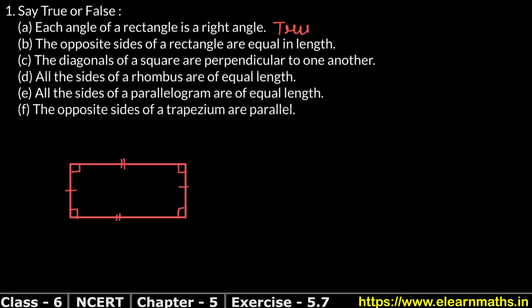Right angle means 90-degree angle. And the opposite sides of a rectangle are equal in length. So this statement is true.